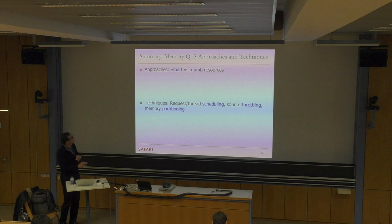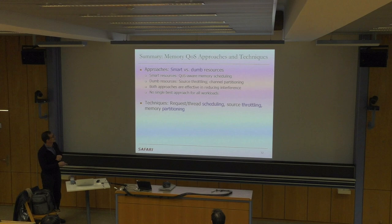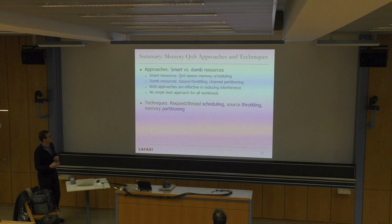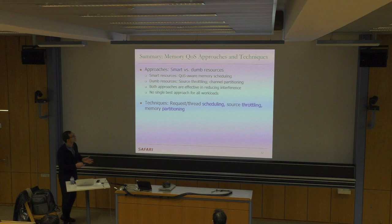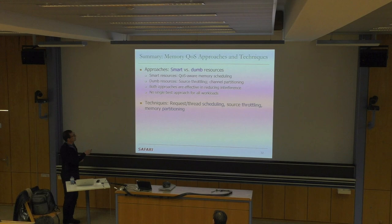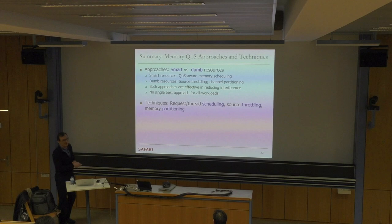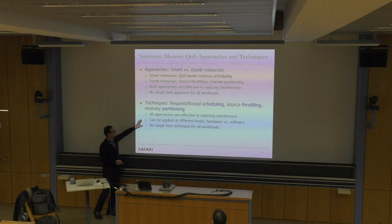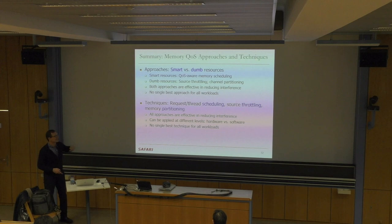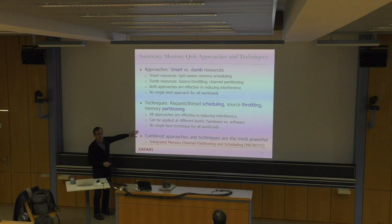We talked about two different approaches: smart resources (e.g., QoS-aware memory scheduling) and dumb resources (e.g., source throttling, channel partitioning, thread scheduling). Both approaches are individually effective in reducing interference, but there's no single best approach for all workloads. Sometimes making resources smart works better; sometimes keeping resources dumb but doing something smart elsewhere works better. We've also seen techniques like scheduling, throttling, and partitioning, all effective at different hardware and software levels.